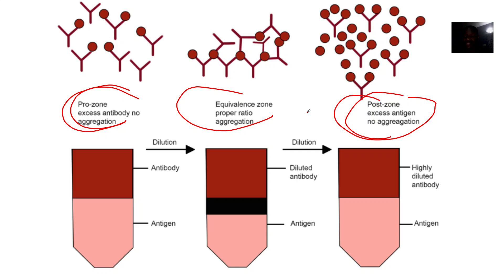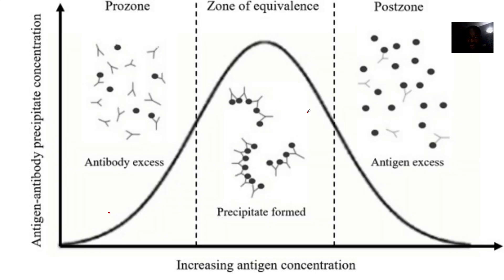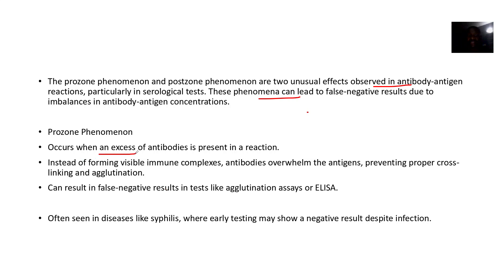If it's an antibody that is in excess, it's called prozone. For the prozone, having excess antibodies means it occurs when there is an excess amount of antibodies present in the reaction. So instead of forming visible immune complexes, the antibodies overwhelm the antigens — the antigens are diluted — and this can lead to false negative results. The problem is there, but you can't pick it up simply because antibodies are too much.